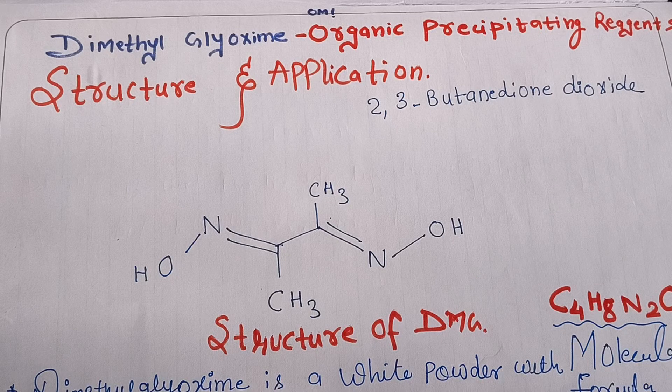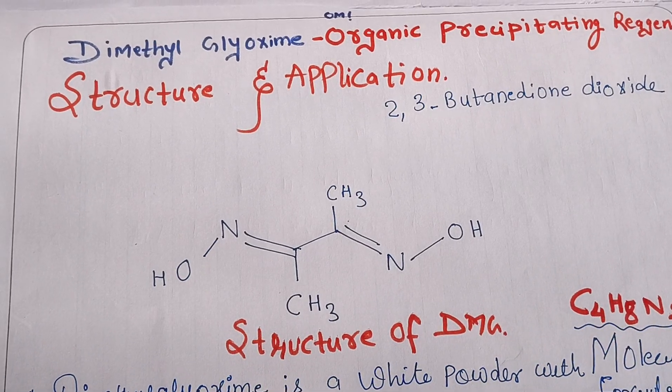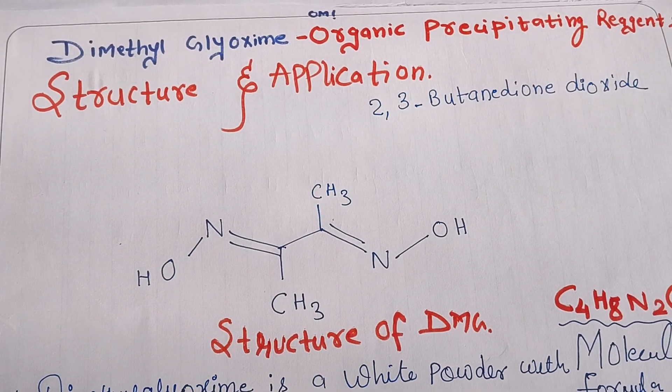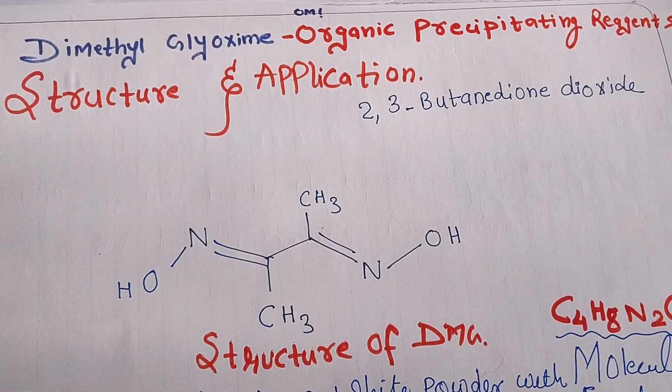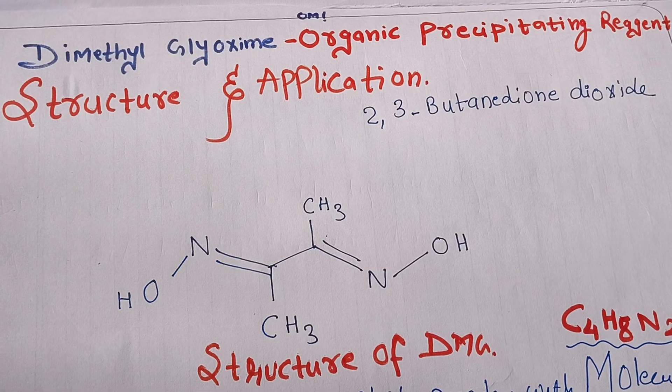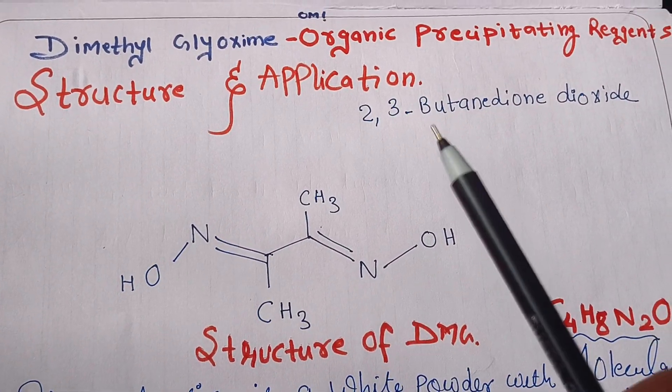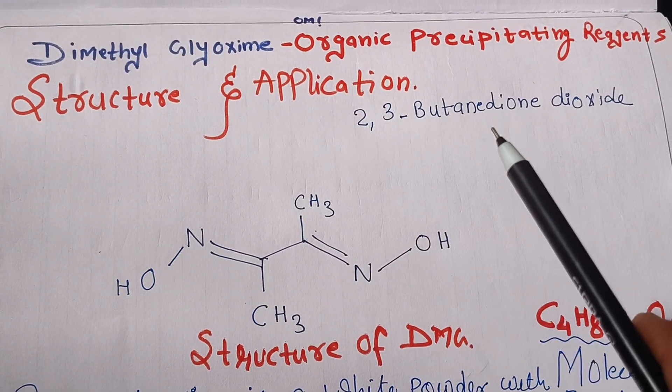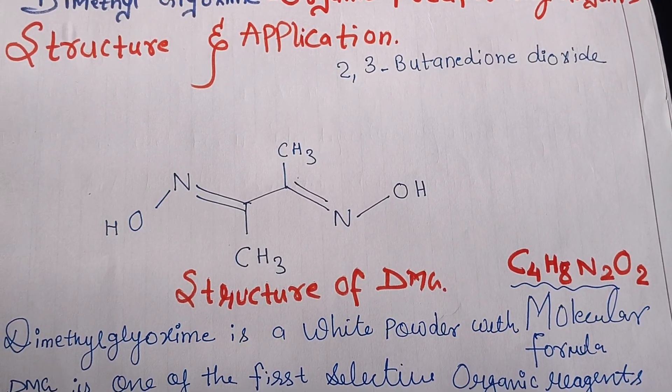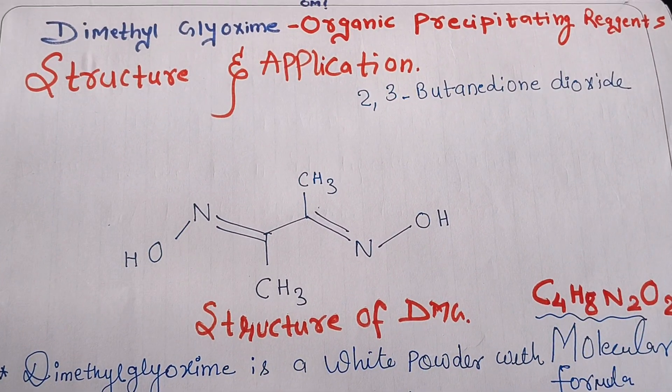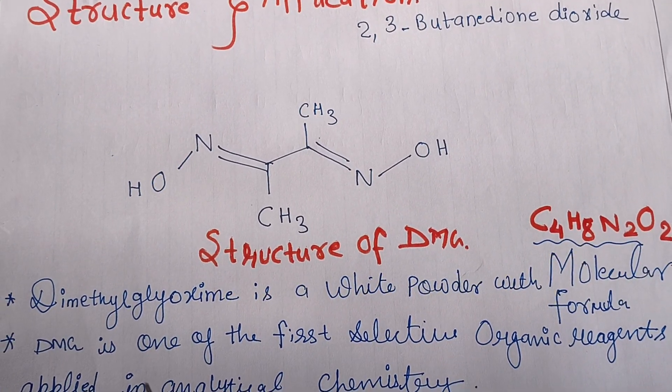The name itself is dimethyl, so there will be two CH3 groups attached in the structure of the oxime group. This organic reagent is very important in analytical chemistry. The other name of dimethyl glyoxime is 2,3-butanedione dioxime. The molecular formula is C4H8N2O2 and it is a white powder.